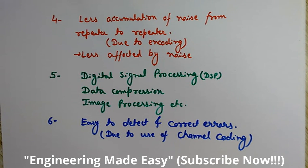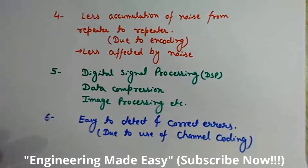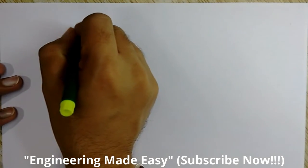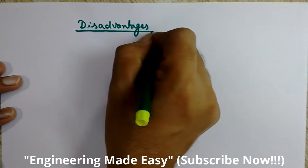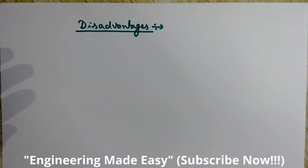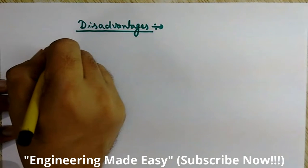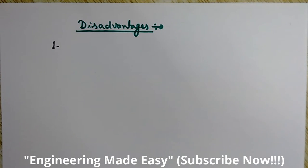Now we will discuss some disadvantages of digital communication. The first disadvantage: more transmission bandwidth is required in digital communication as compared to analog communication. This is due to the increase in data rate when an analog signal is converted into a digital signal — that is, due to analog-to-digital (A to D) conversion, the data rate increases, requiring more transmission bandwidth.